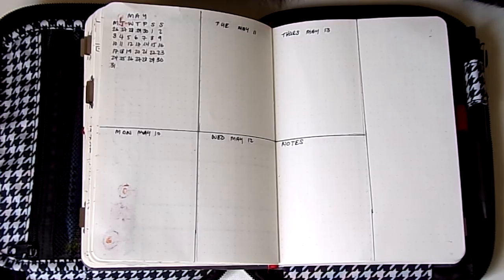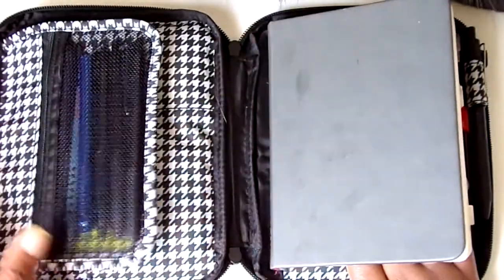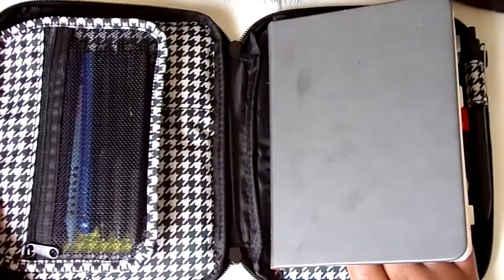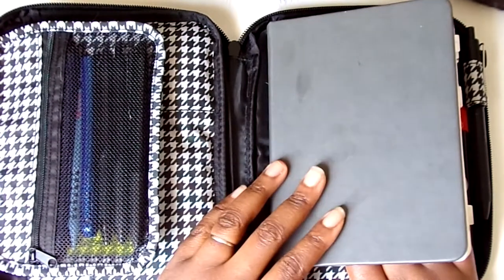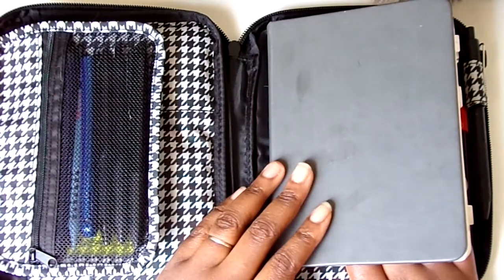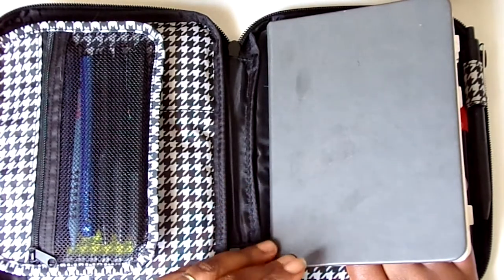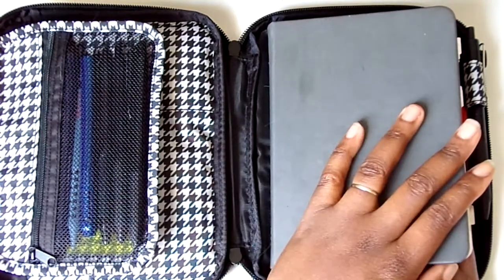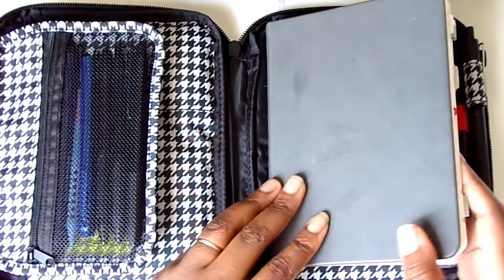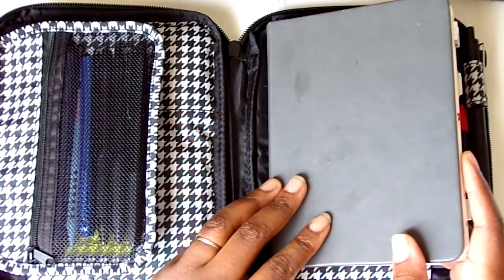So I had penciled my spread in and then I started to go in with a fineliner and forgot to record. So that's why everything's finelinered out. But I'm in my Scribbles That Matter B6 size in my Houndstooth cover from JetPens. I'll be sure to link it below. And I love this little notebook. It's so cute.